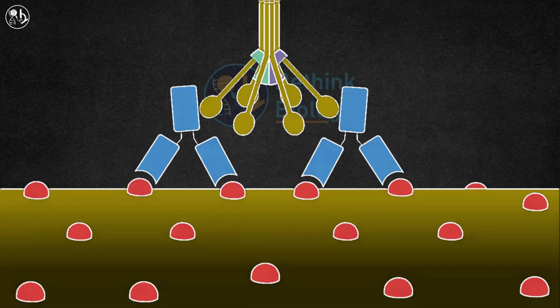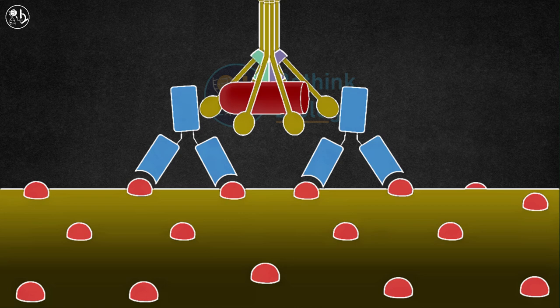C1S cleaves and activates the complement protein C4, releasing C4A, a short peptide fragment that functions as an anaphylotoxin. C4B, the remaining big fragment with the labile thioester bond, covalently adheres to the bacterium's surface by ester or amide bonds.